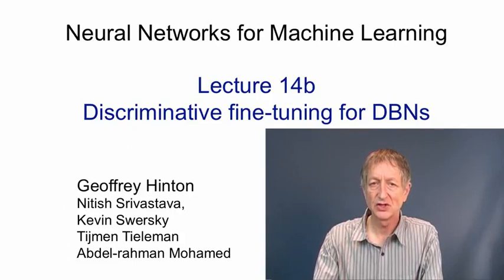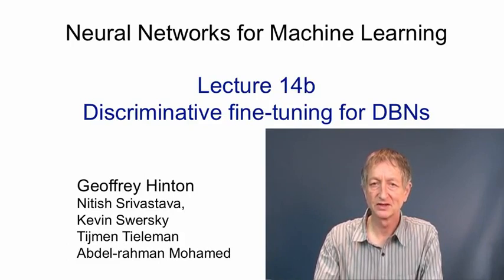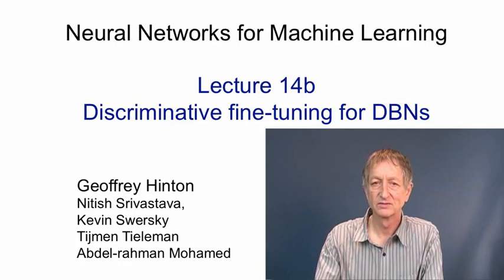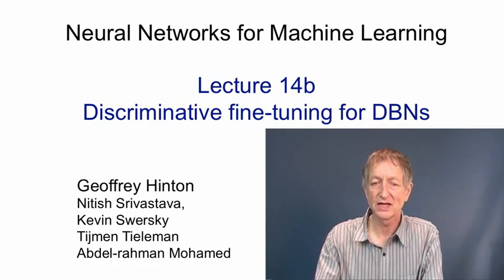In this video I'm going to show how we can first learn a deep belief net by stacking up restricted Boltzmann machines, and then treat that as a deep neural net that we fine-tune discriminatively. So instead of fine-tuning it for better generation as we did in the previous video, we're going to fine-tune it to be better at discriminating between classes. This works very well and led to a big renewal of interest in neural networks. In speech recognition it's had a major influence, and many leading groups are now switching to using deep neural nets in order to reduce the error rate.